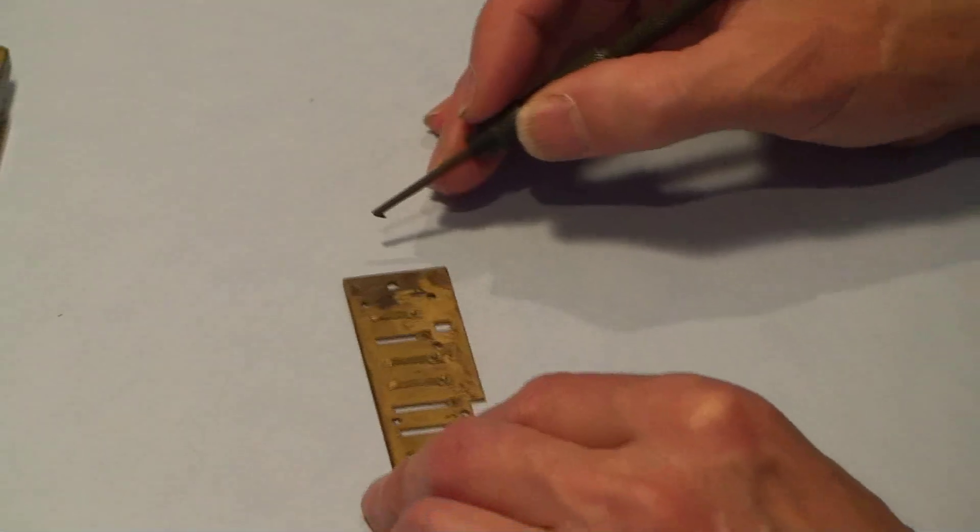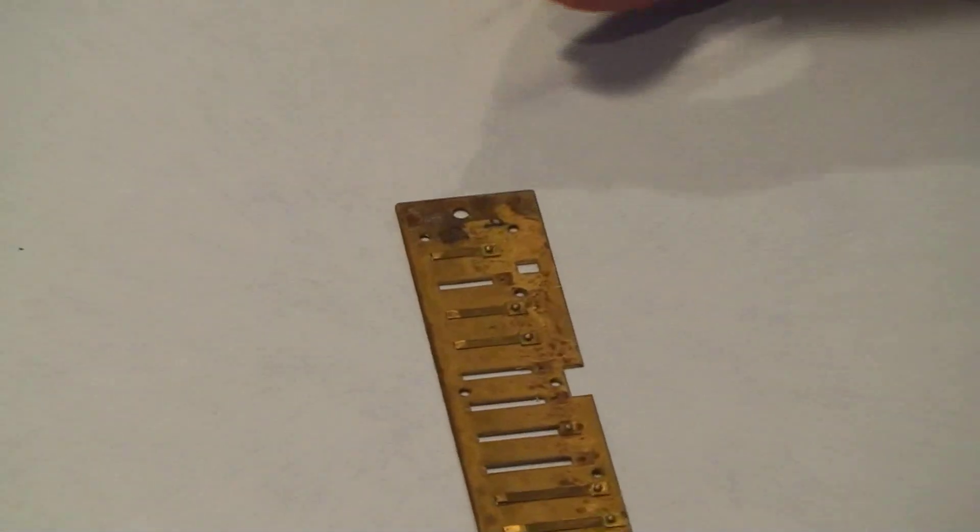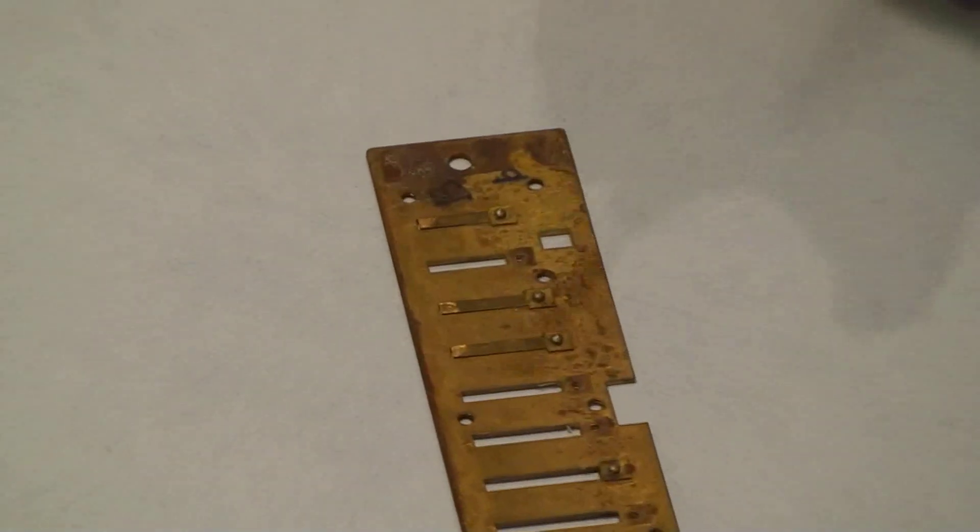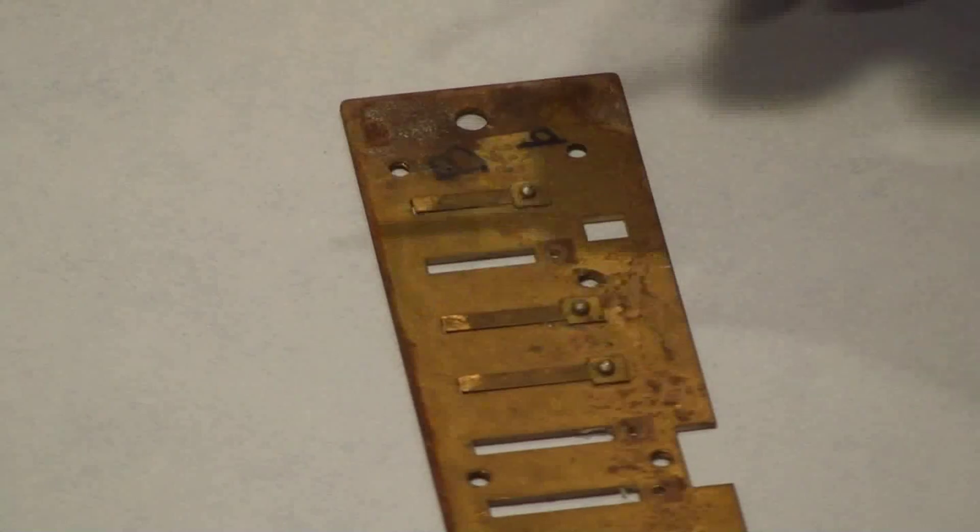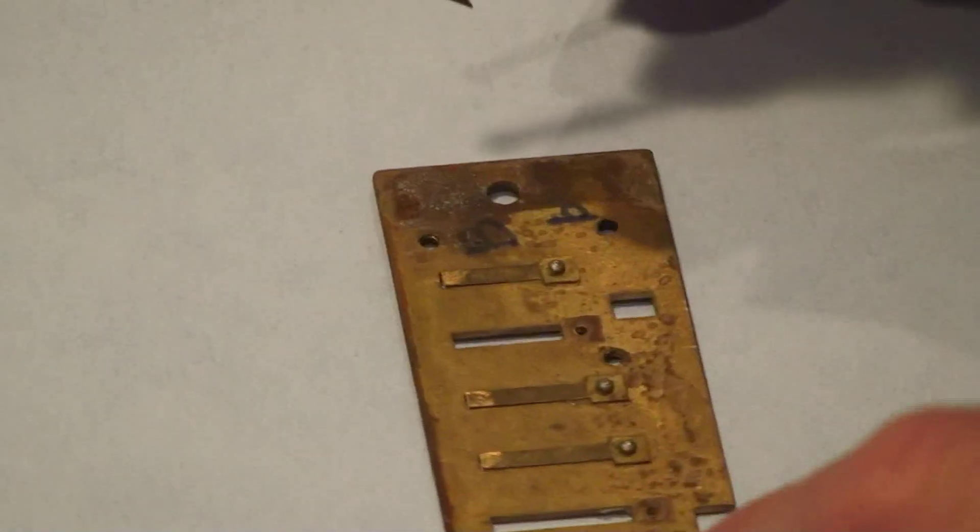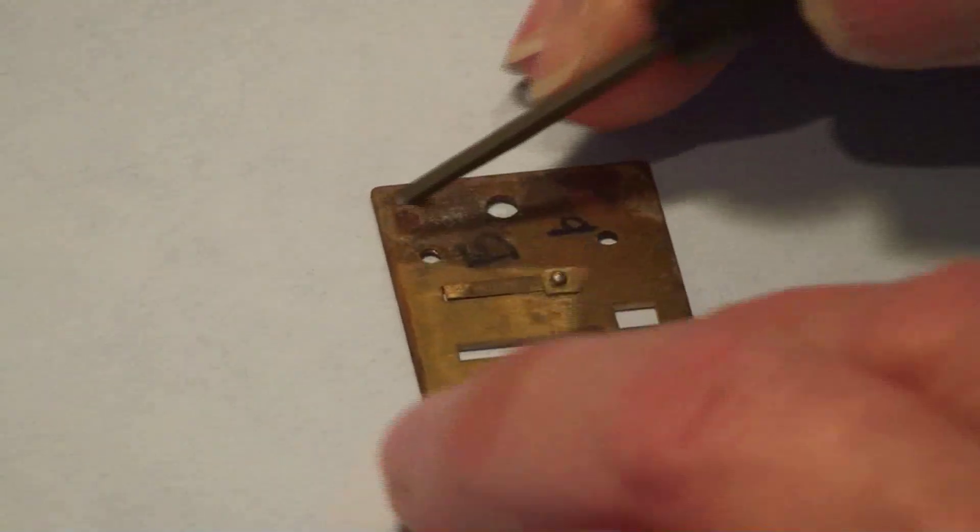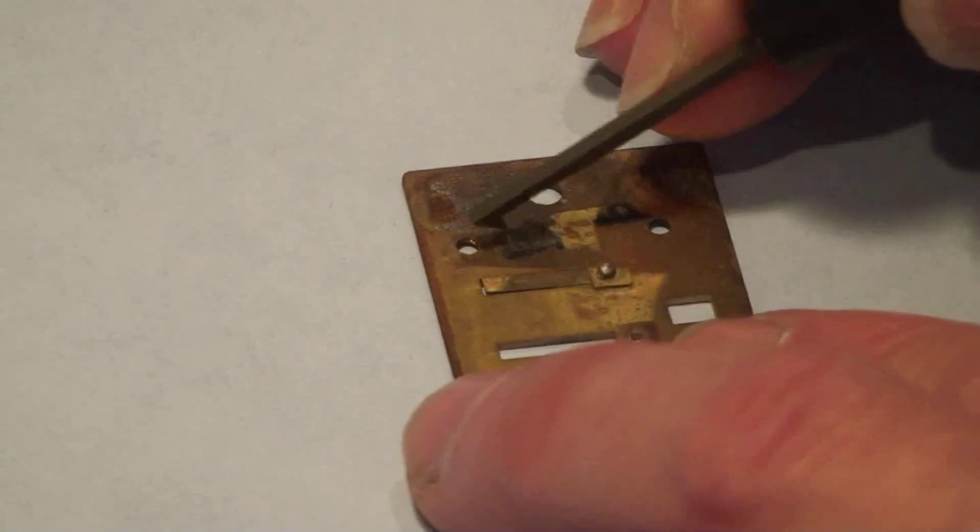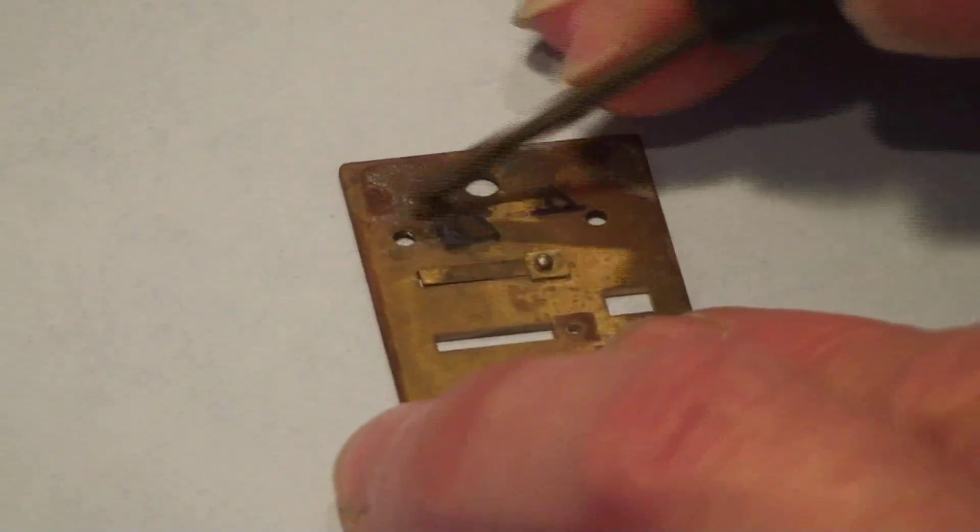What I'm going to do right now is show you how you can get used to using the draw scraper. One of the first things that I would recommend doing is to find a couple of old tarnished reed plates and first scrape on part of the reed plate, not a reed, just the reed plate itself.